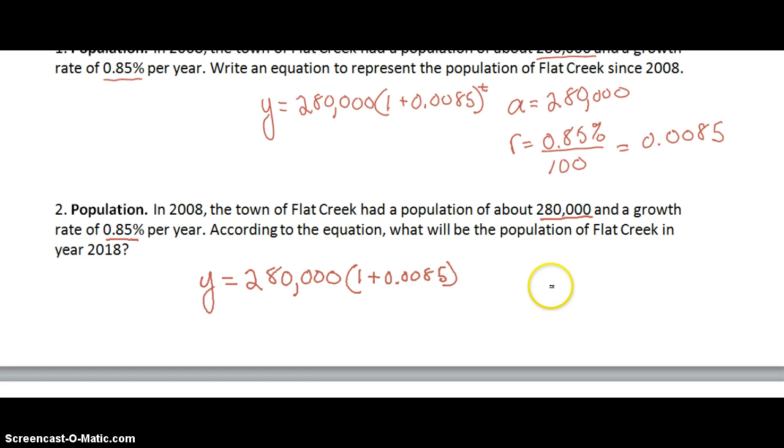So the only thing we're missing is T. Let's figure out what T is. We want to look and see what the population is in 2018. If T is in years how many years has it been from 2008 to 2018? We can just do 2018 minus 2008 and we see that T has been 10 years. So then we can substitute 10 in for T and we can solve our equation.